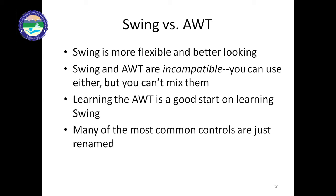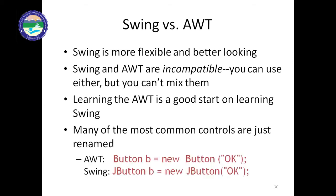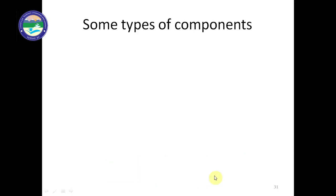Many common AWT controls are simply renamed in Swing. For example, in Java AWT it is 'Button', and in Java Swing it becomes 'JButton' — only the letter 'J' is prefixed, and the rest of the statement remains the same. This is the key difference between Java Swing and Java AWT.